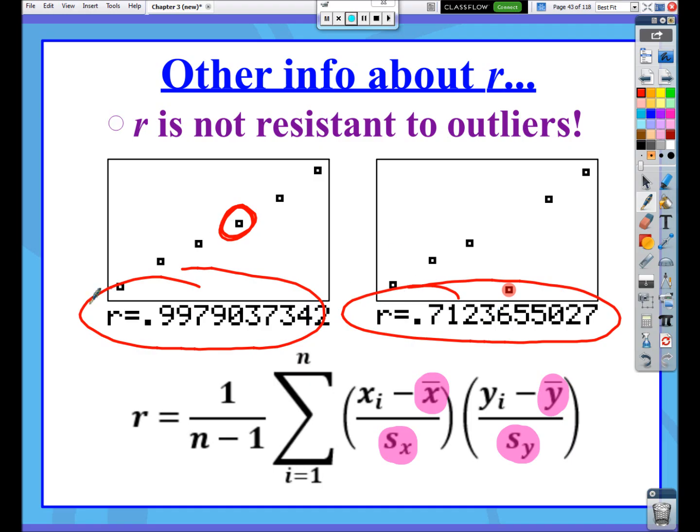Man, that really went from almost extremely perfect strength down to, I don't know, 0.7, what did we say? That was going to be like moderate strength or maybe somewhat. It really knocks it down.